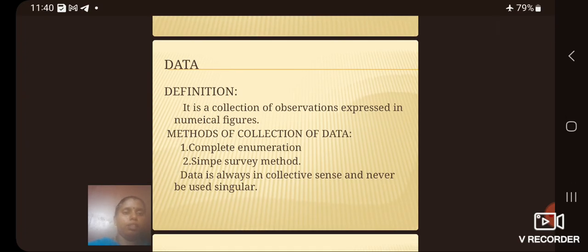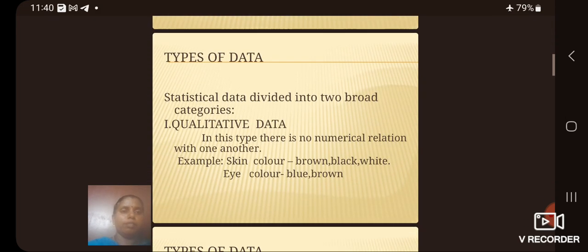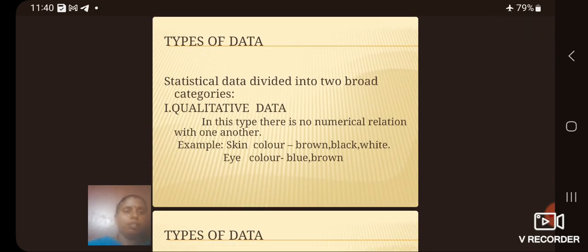Data is always in collective sense and never be used in singular. Then next we see the types of data. Statistical data divided into two broad categories. First one is qualitative data. In this type there is no numerical relation with one another. Example: skin color and eye color.